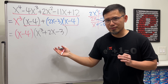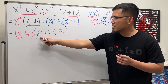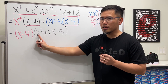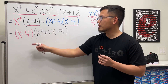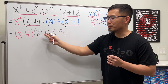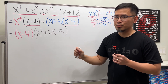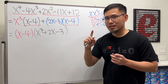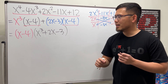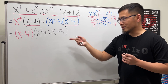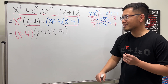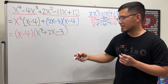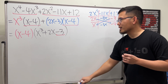Now, are we done? No, because this right here — x to the third power plus 2x minus 3 — is actually factorable. Notice, if I just plug in 1 into x: 1 to the third power is 1, plus 2 times 1 which is 1 plus 2 which is 3, and 3 minus 3 is 0. So 1 is a zero for this, meaning x minus 1 is a factor. I'll show you this way using factor by grouping. I'm going to break down the negative 3.